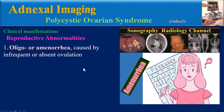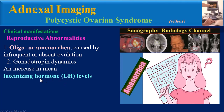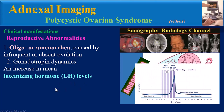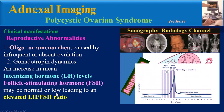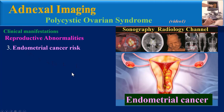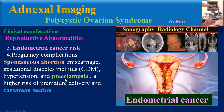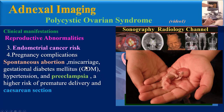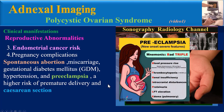Clinical manifestations relative to reproductive abnormalities include oligo- or amenorrhea caused by infrequent or absent ovulation, gonadotropin dynamics disturbances including an increase in mean LH levels while FSH may be normal or low — leading to an elevated LH-to-FSH ratio. Other findings include endometrial cancer risk and pregnancy complications such as spontaneous abortion, miscarriage, gestational diabetes mellitus, hypertension, preeclampsia, and a higher risk of premature delivery and caesarean section.